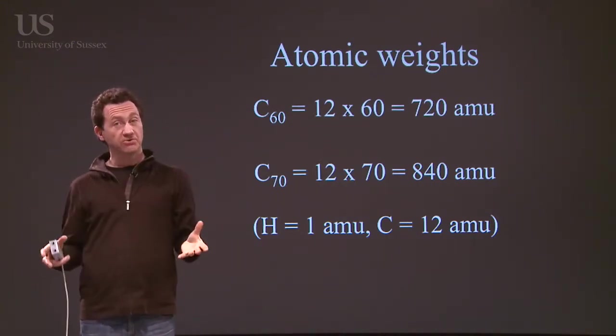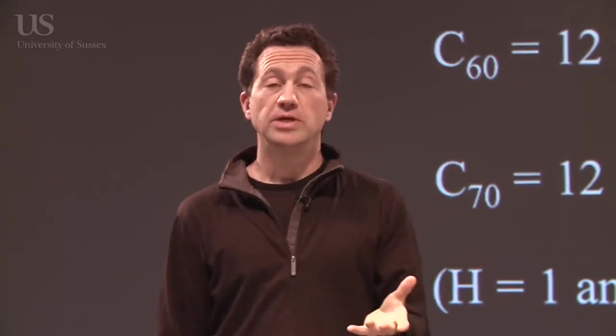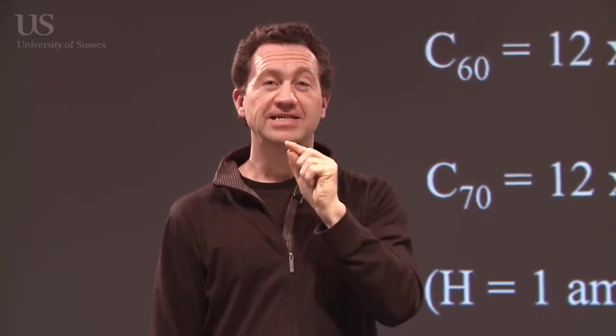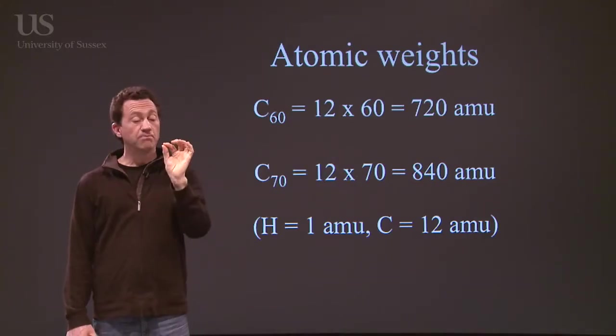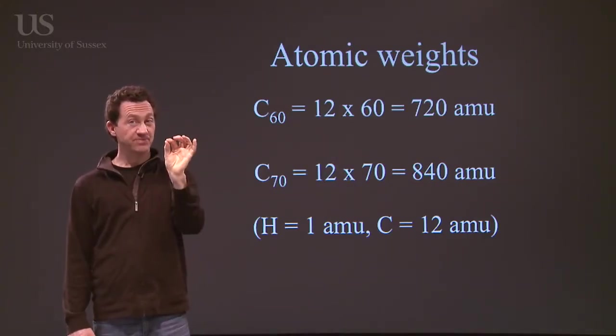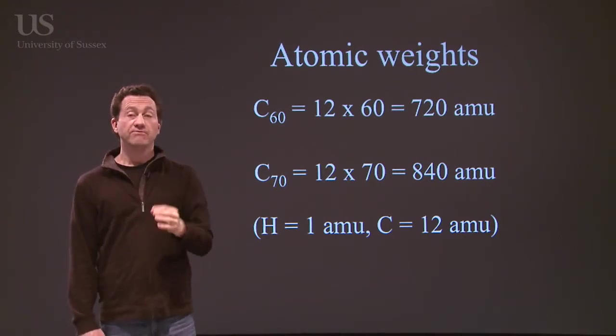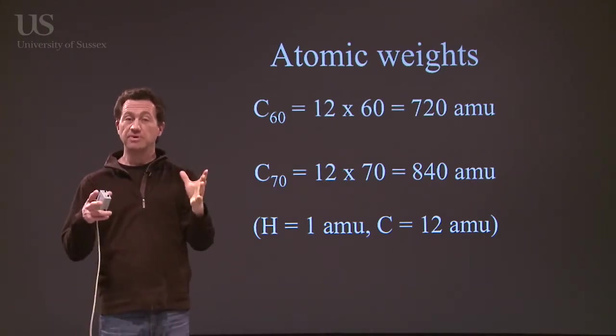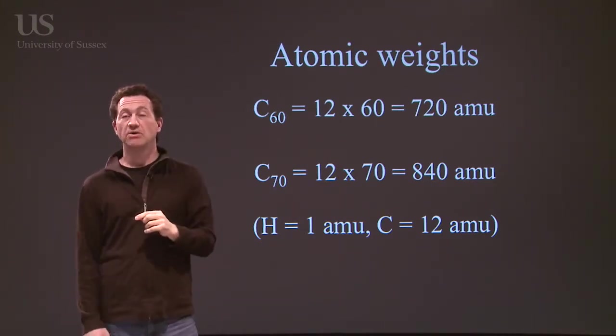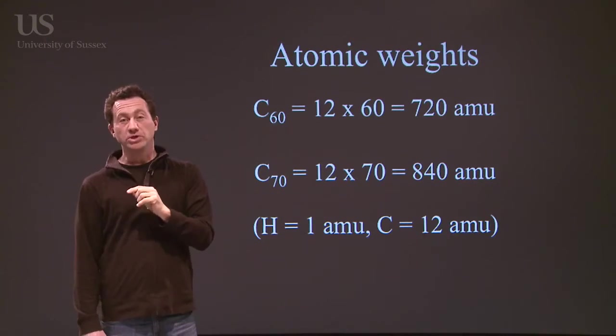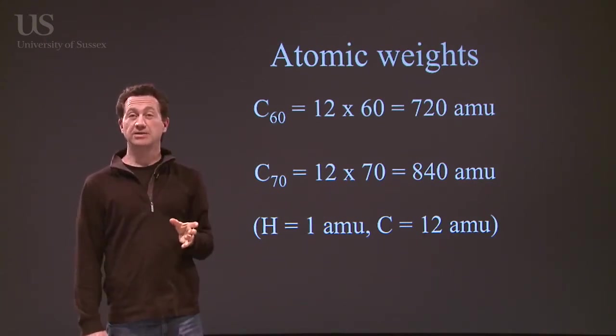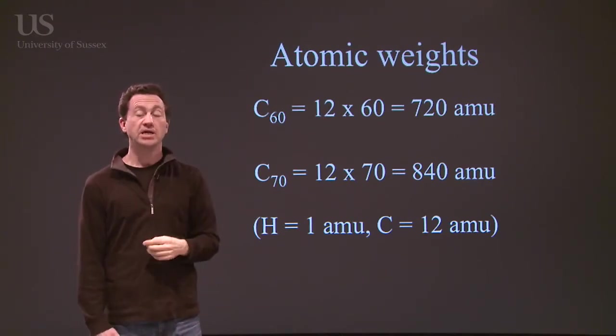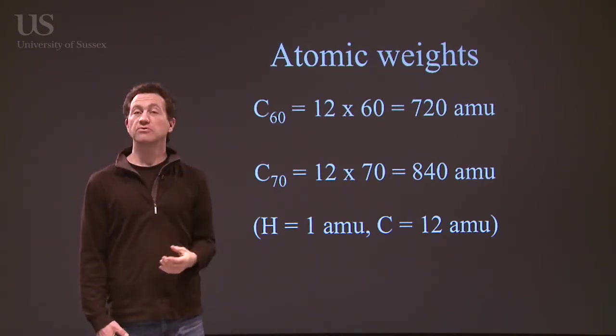So if you had a 60 atom molecule made of carbon, how much would it weigh? Well, you could work it out. It should be 60 times 12. That's 720 times the hydrogen atom. So if you can put the molecule in a mass spectrometer, it gives you a lot of information for how much this thing weighs. C70 is another cage. It's a bit like a rugby ball. So that would have a mass of 70 times 12, which is 840 mass units.